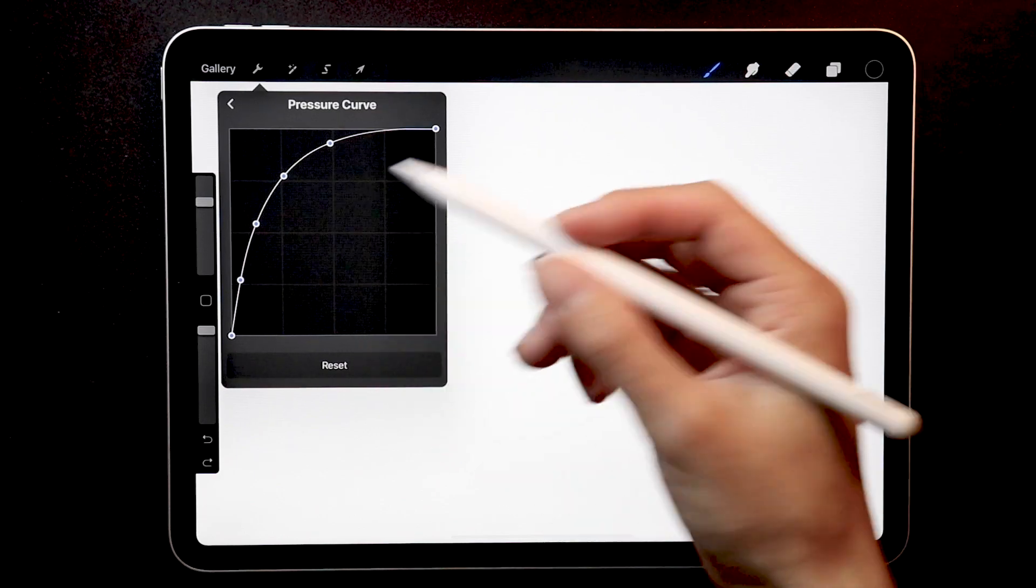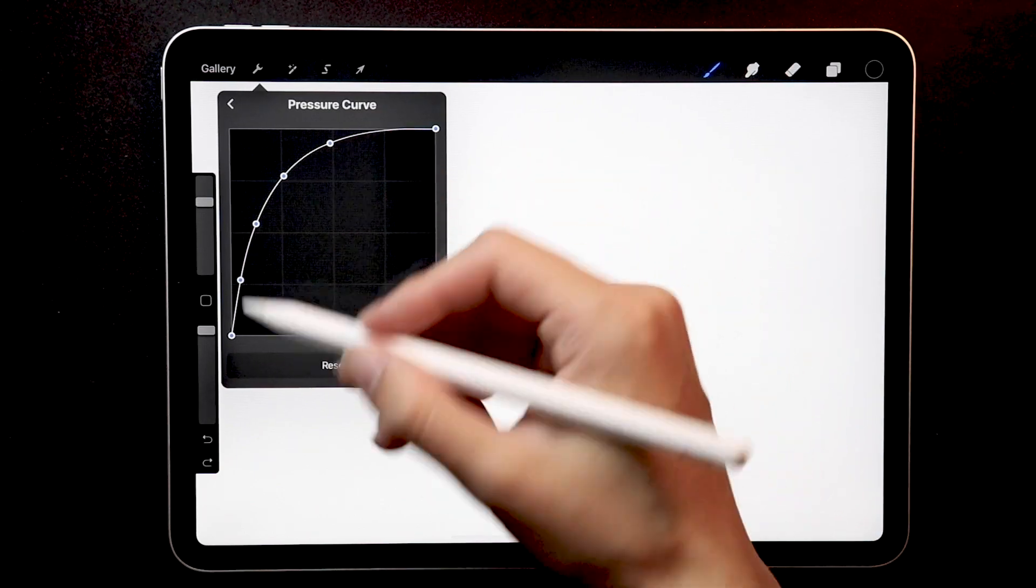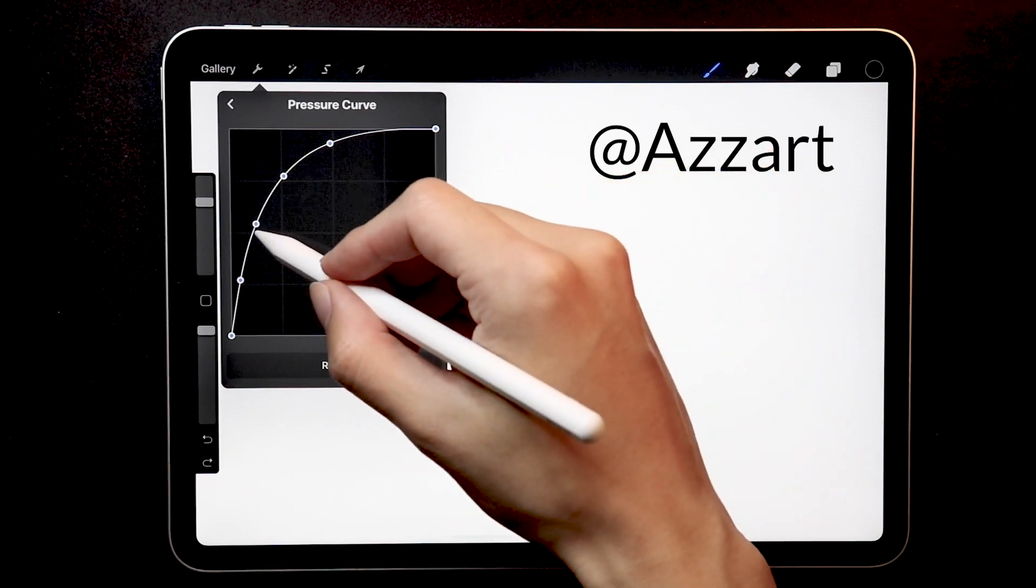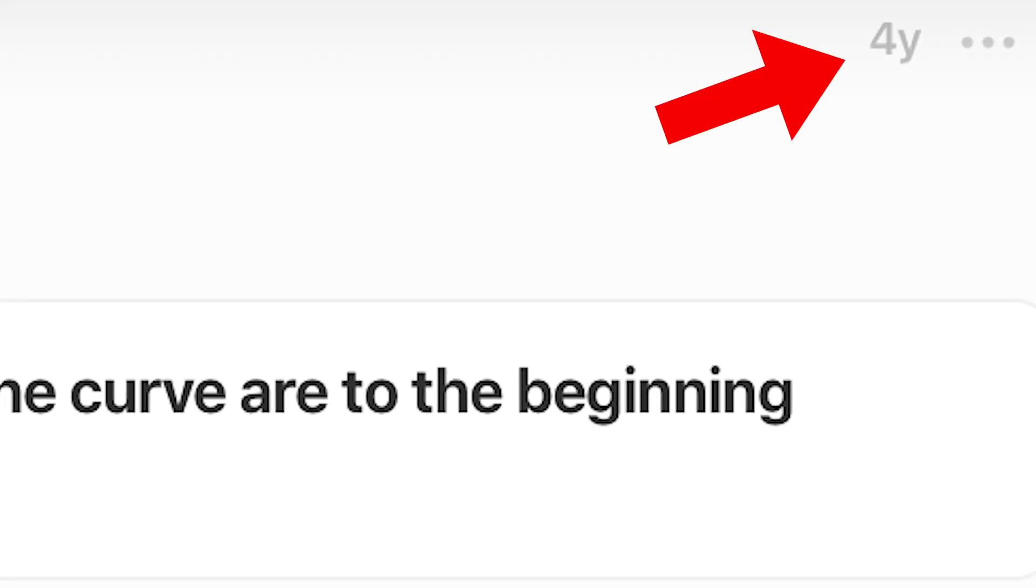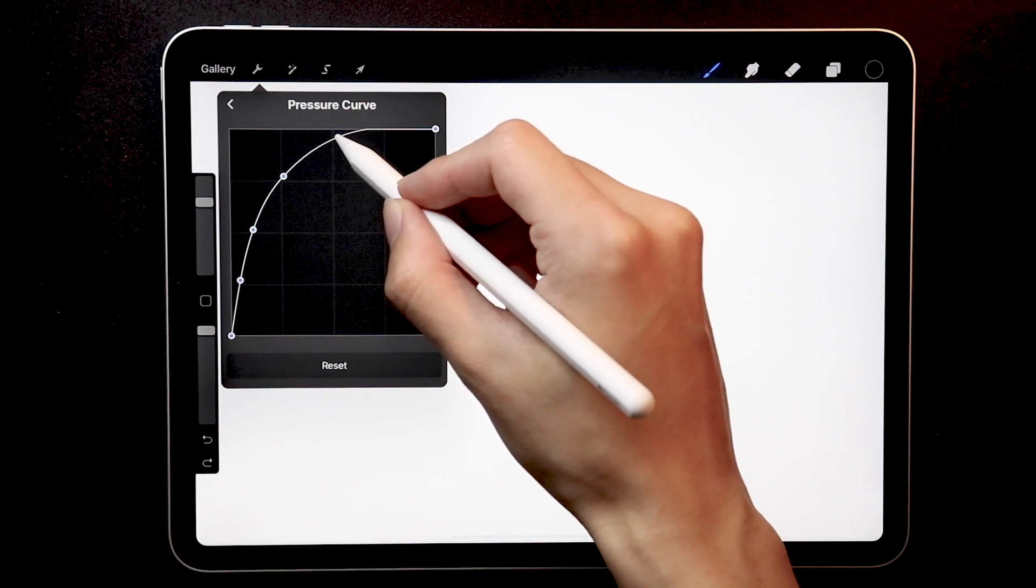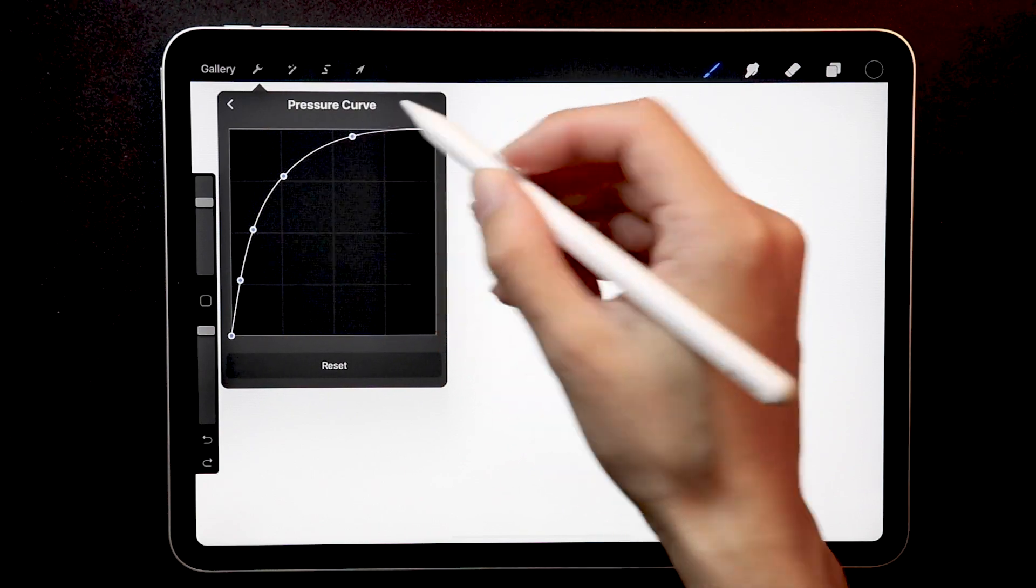So these are just a few examples of how a pressure curve can look like. Big shout out to Procreate user Azerd, hope I got that right, who actually posted about this four years ago. And I still think to this day it does the best job at explaining the pressure curve. And I'll leave a link to the original post down in the description for those of you who are interested.